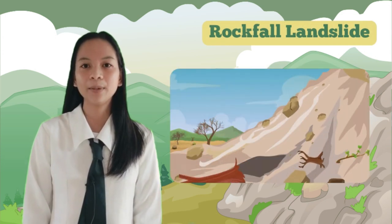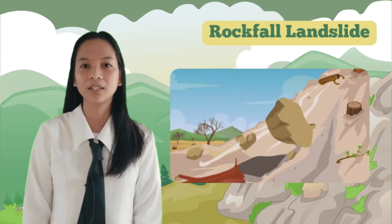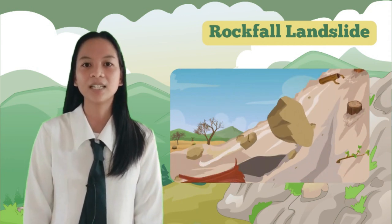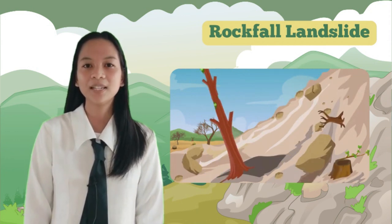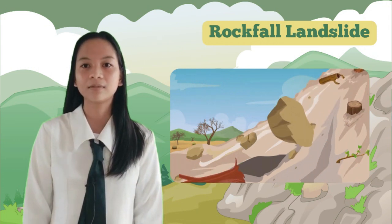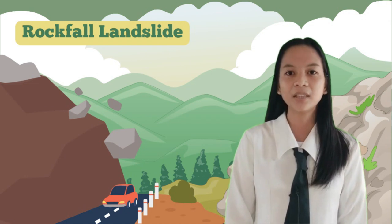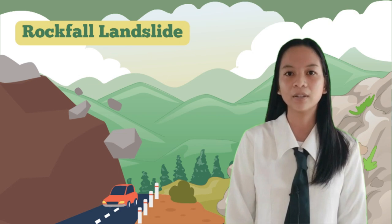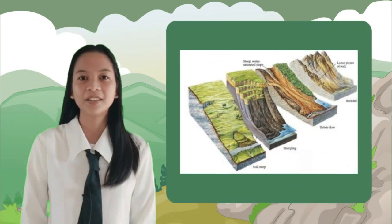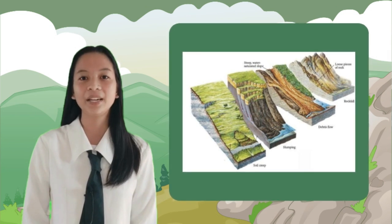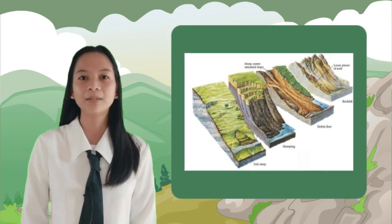Let's explore the rockfall landslide. Rockfall is the sudden and rapid movement of rocks or boulders down a steep slope or cliff face. It can be triggered by various factors such as weathering, erosion, seismic activity, or freeze-thaw cycles. Rockfall landslides pose a significant threat to human life and infrastructure, especially in areas with rocky cliffs or mountainsides. Understanding these different types of landslides is crucial for assessing and mitigating the risks associated with slope instability.